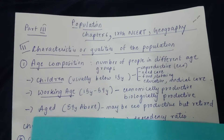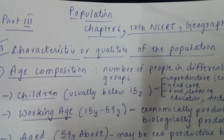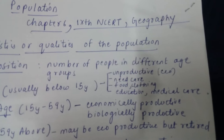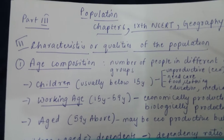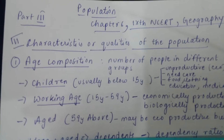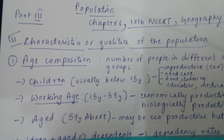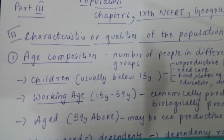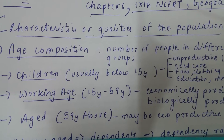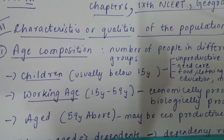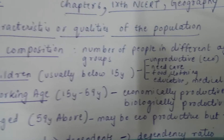The first point we will read about is age composition. Age composition means the number of people in different age groups. For a place like Delhi, it means knowing how many children, how many working age people, and how many aged people there are. Children are usually defined as those 15 years and below — technically, that is the definition.